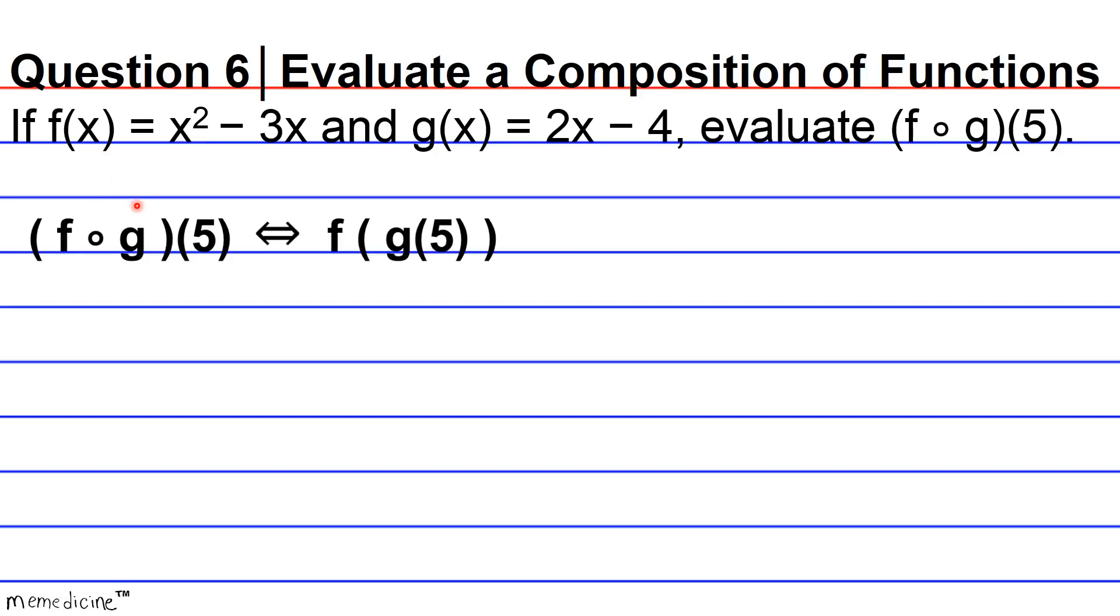So both of these composition notations basically mean that we're going to take 5 and substitute it in for x in the function g(x). Then we're going to take the result of g(5) and plug it into the function f(x) for x and get a result.